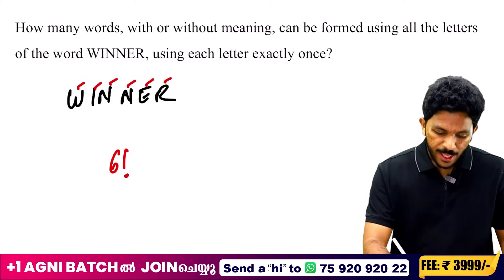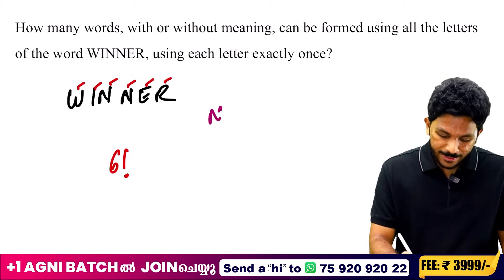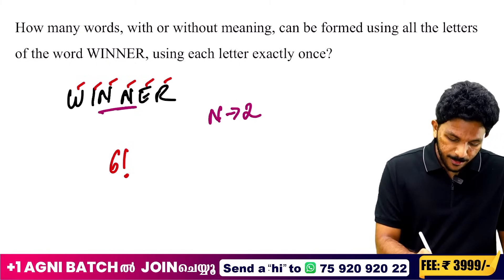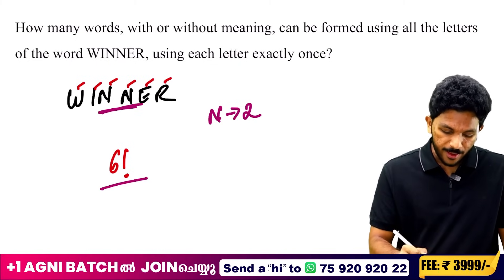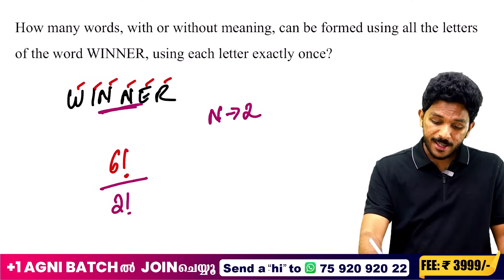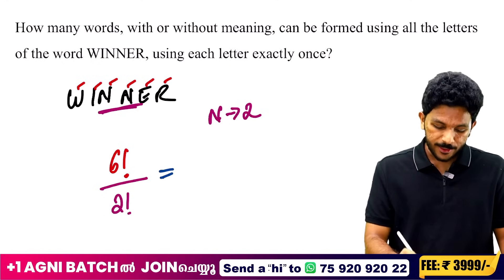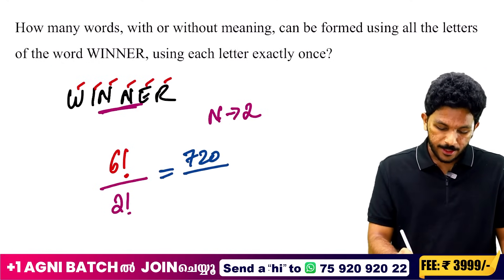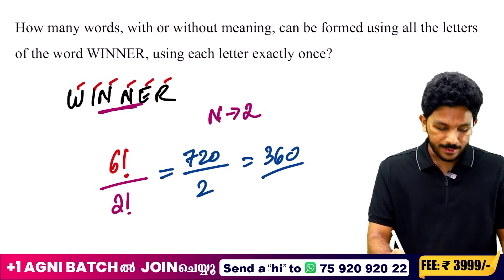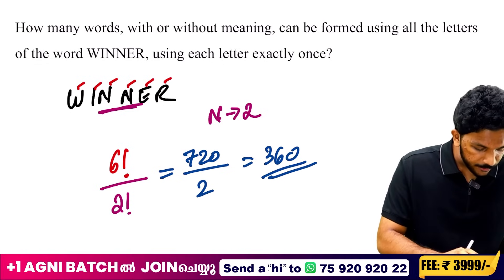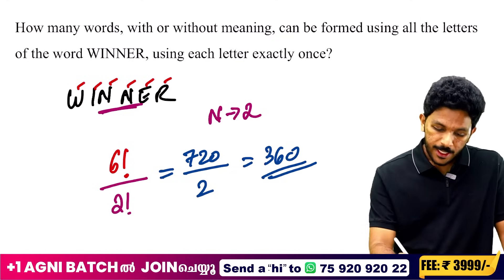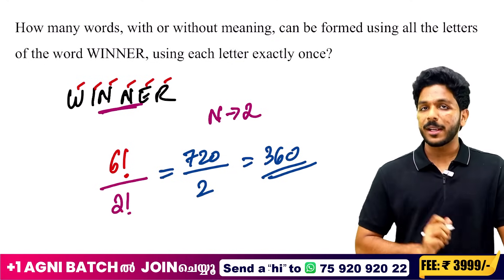How many letters are the same in WINNER? Two letters — N appears twice. So we divide 6! by 2!. Six factorial is 720; divided by 2 factorial which is 2; the answer is 360.